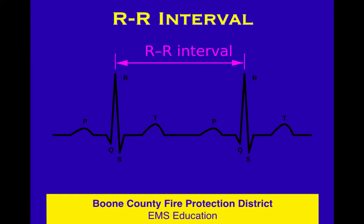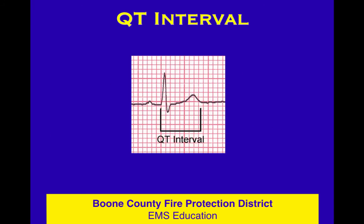The R-to-R interval is discussed particularly when looking at regularity of a rhythm. The R wave is the tall positive complex and really the middle of the QRS, so ventricular depolarization is halfway done at the peak of that R. The R-to-R interval can be regular or irregular — that's how we assess rhythm regularity — and the R-to-R is also how we calculate rate.